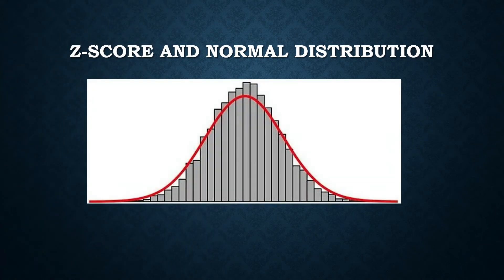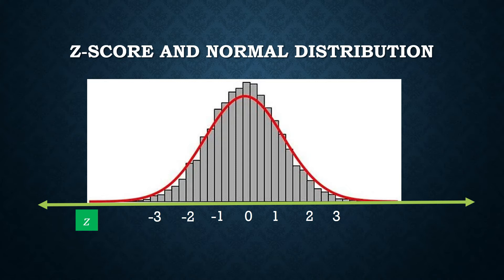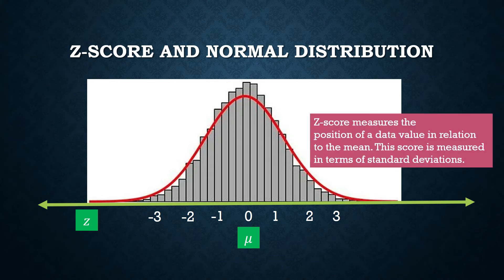Our distribution follows the normal distribution. We can look at z-scores as numbers on the real number line, where zero is the origin. Our reference point is the mean, which we give a z-score of zero. The rest of the data values can take z-scores of one, two, three, negative one, negative two, negative three, or decimal values like 1.5 or 1.3.